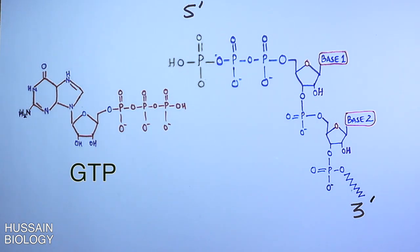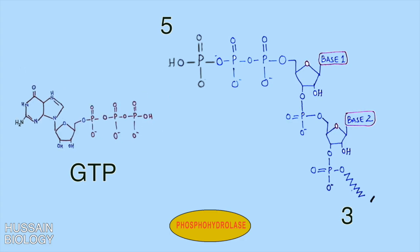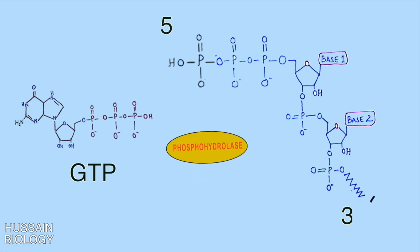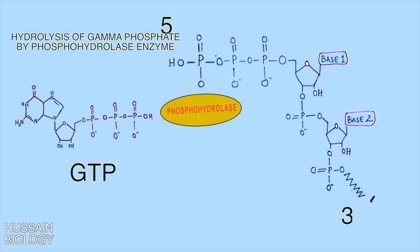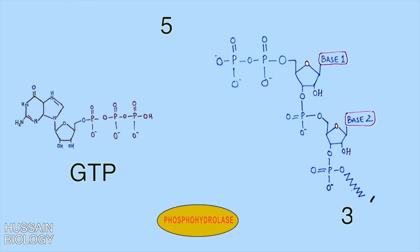In the first step, the phosphohydrolase enzyme acts on the gamma phosphate of the pre-mRNA molecule and removes it by hydrolysis. So the phosphohydrolase enzyme drives hydrolysis of the gamma phosphate of the nascent mRNA, thus removing it, and we get the resulting structure.